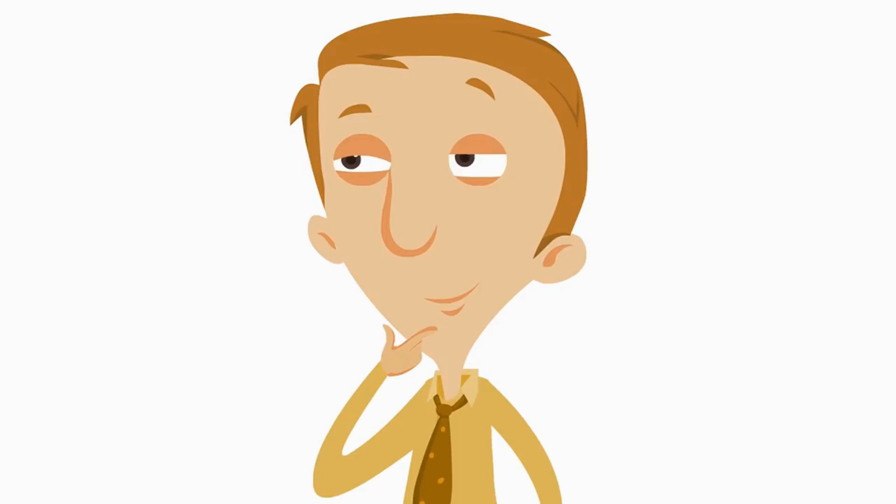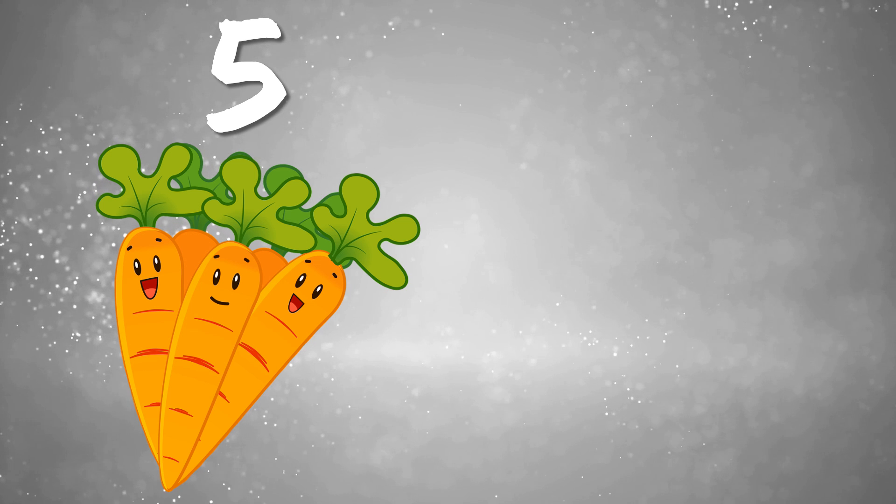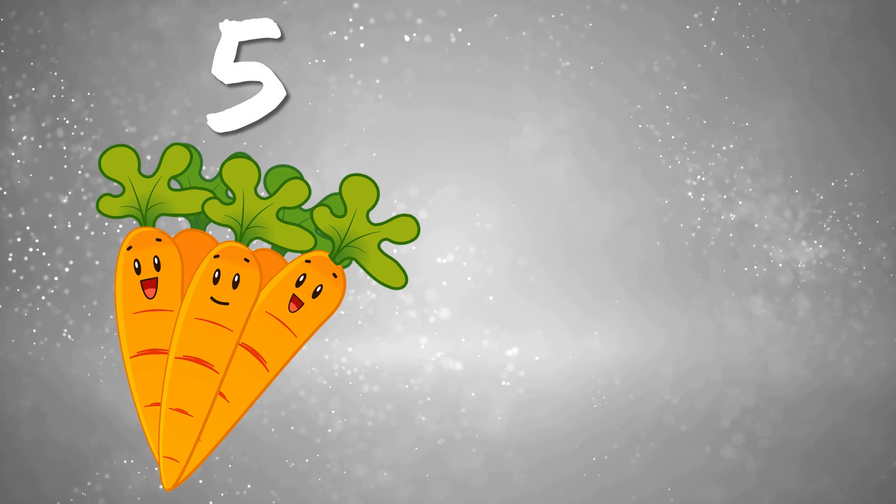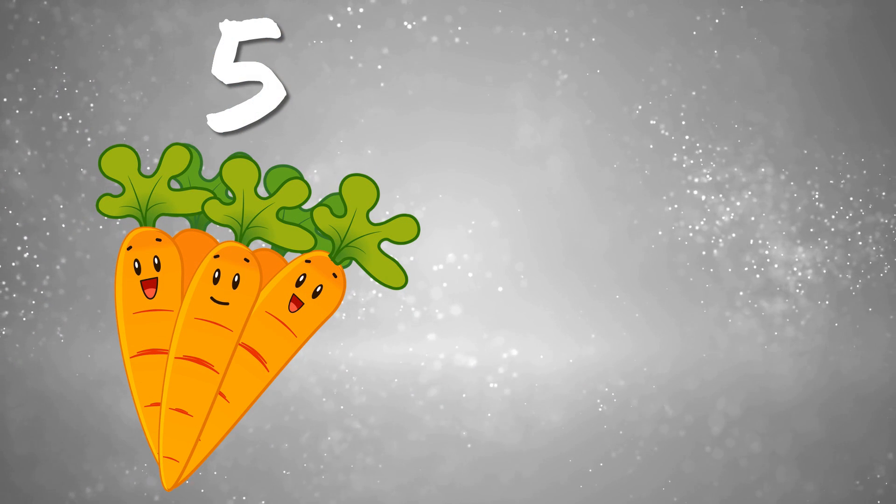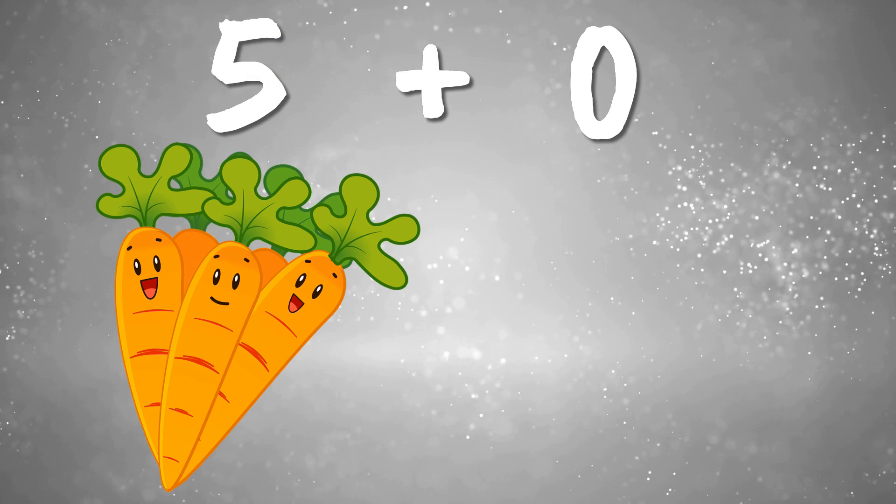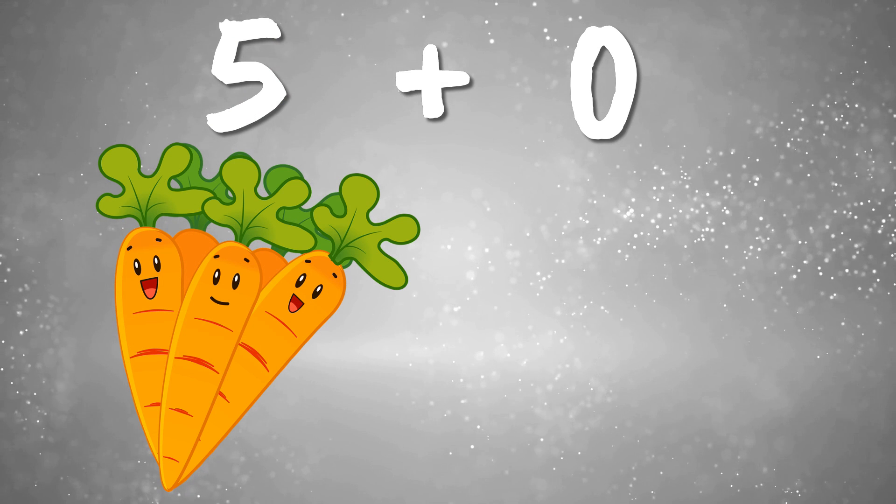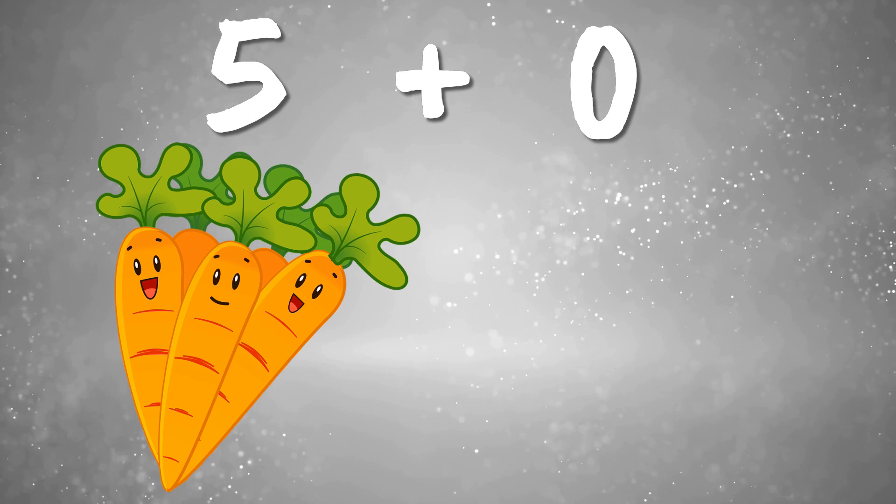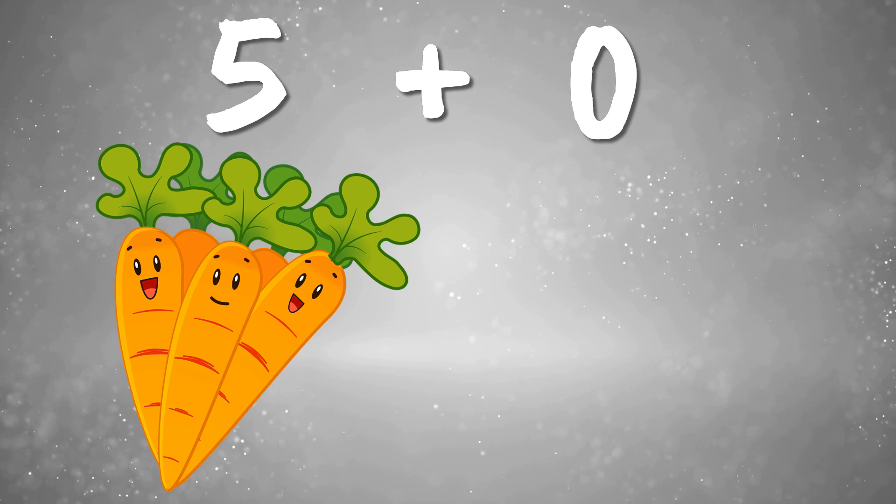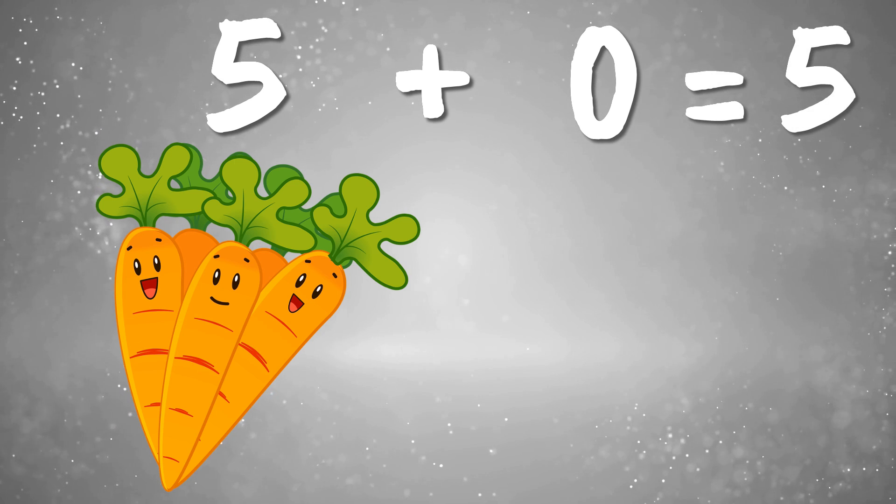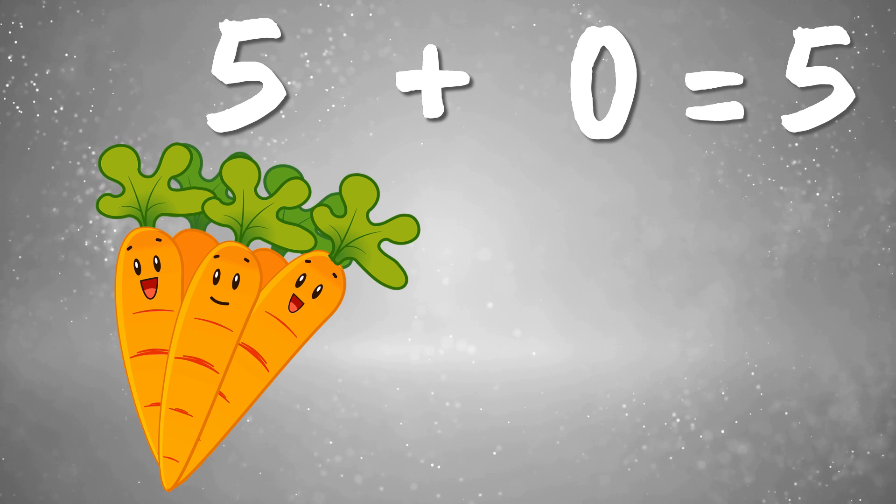All right, let's say I have five carrots, and someone offers me more, but I politely say, no, thank you, I have enough. So I had five, and we're adding no more carrots. Zero carrots. Five plus zero. What is five plus zero? Yeah, five. If you add zero to a number, the number doesn't change. You're adding nothing. Great job.